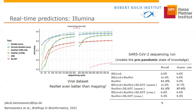This holds also for real sequencing data from a SARS-CoV-2 sequencing run, which models the pre-pandemic state of knowledge by not including the SARS-CoV-2 reference genome in the training database. After only 50 cycles, corresponding to reads of only 50 bp, we achieve an 80-fold increase in sensitivity compared to the standard mapping approach.